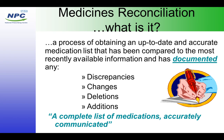A complete medicines reconciliation will actually look at any discrepancies — so maybe a patient's brought a list of medication but there's something that doesn't marry up with what you think they're taking. Any changes? So if a patient comes into hospital with a pulse of say 42 and they're taking Atenolol 50mg at home — a beta blocker — you might think that the doctors would stop that. Any deletions?